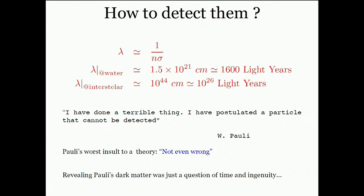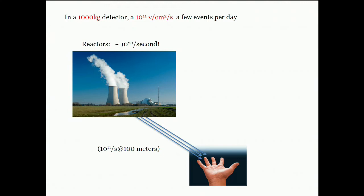Bethe and Peierls estimated from Fermi theory what would be the neutrino cross-section and found an extremely tiny number, declaring there was no practically possible way of detecting a neutrino. In fact, it's quite challenging to stop a neutrino — the mean free path of a neutrino in water would be on the order of a thousand light years. Not surprisingly, Pauli was quite ashamed of his postulate, fearing the theory might be not even wrong.